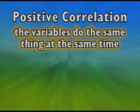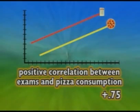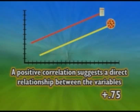A positive correlation is when the variables do the same thing at the same time. That is, as one increases or decreases, so does the other. So if pizza sales skyrocket during exam week at the end of each semester, we can say there's a positive correlation between exams and pizza consumption. A positive correlation suggests a direct relationship between the variables. They do the same thing at the same time.